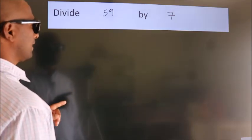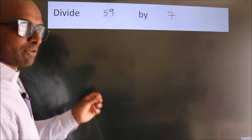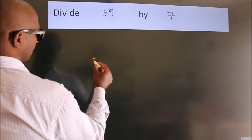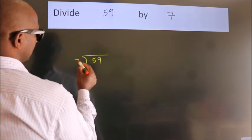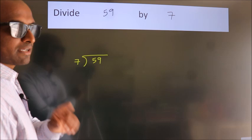Divide 59 by 7. To do this division, we should frame it in this way. 59 here, 7 here. This is your step 1.